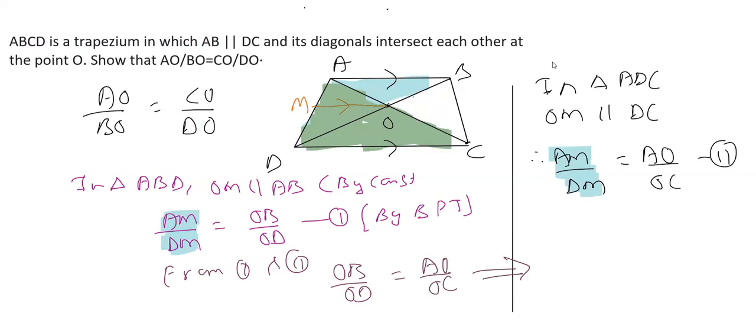And after that, you do cross multiplication. From cross multiplication, we can transpose this. And by cross multiplication, you can write AO upon OB is equal to—I am just interchanging. This is actually by ratio concept. It is called alternando.